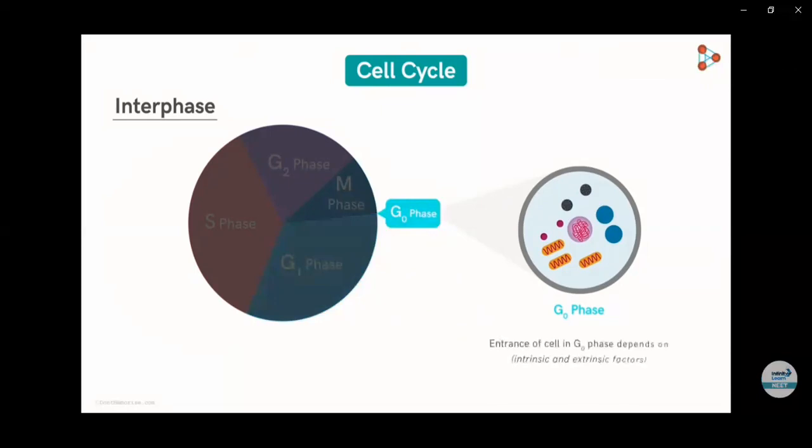A cell could be entered in G0 phase which is not dividing permanently or maybe temporarily. Entrance of cells in G0 phase depends upon intrinsic as well as extrinsic factors, for example, resource availability and nutritional deprivation.